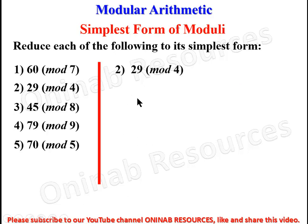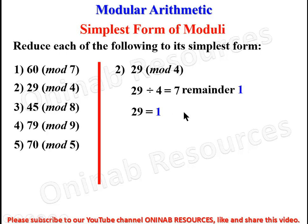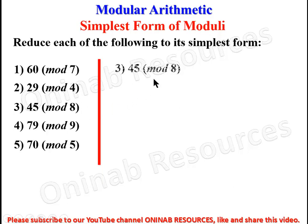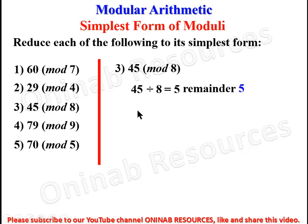For 29 mod 4: 29 divided by 4 gives 7 remainder 1, so 29 = 1 mod 4. This is the simplest form. For 48 mod 8: 48 divided by 8 gives 5 remainder 5, so 48 = 5 mod 8 is the simplest form.